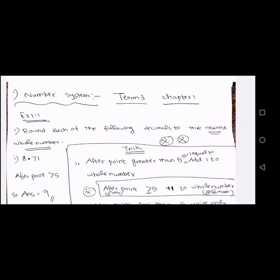First term. The chapter is about rounding each of the following decimals to the nearest whole number. This is the decimal column, the single column. This is the third column. This is the point — no digits. This is the whole number.